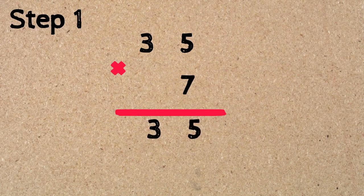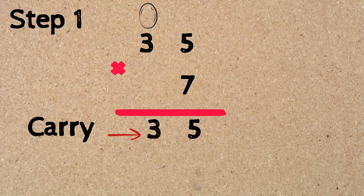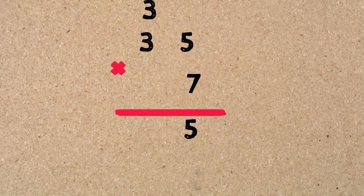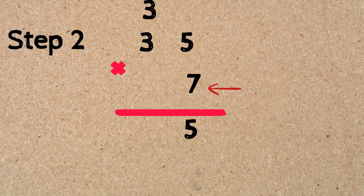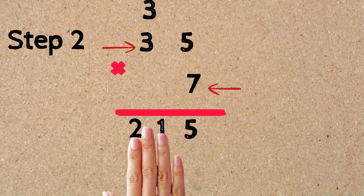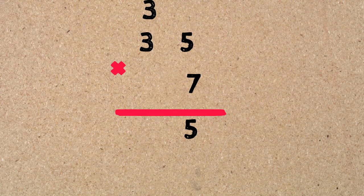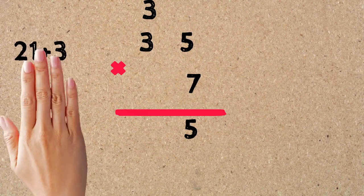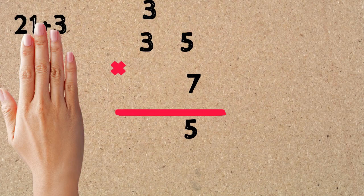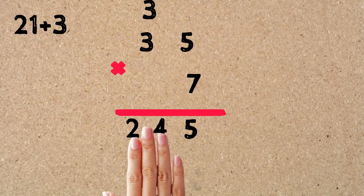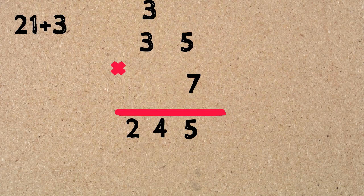Now just like what we do with addition, when we get a two-digit answer we have to carry the first digit on the left to the top of the next column. We move the three to the top of the tens place and then move to the second step, where we multiply the bottom number by the tens digit of the top number. Seven times three equals 21. But we're going to add the three that we already carried to 21. So 21 plus three equals 24, and our answer is 245.